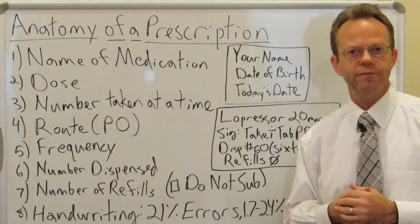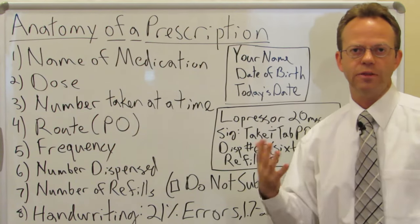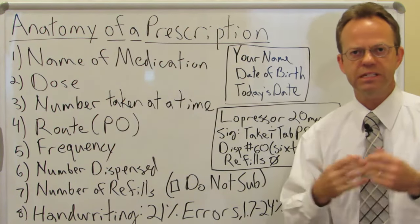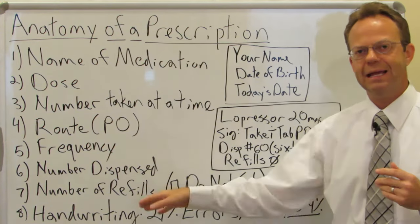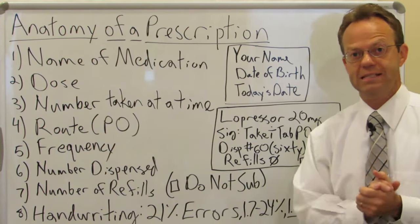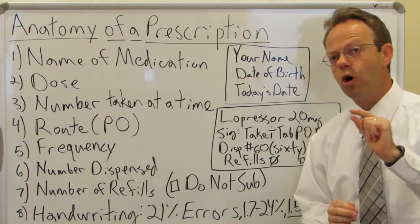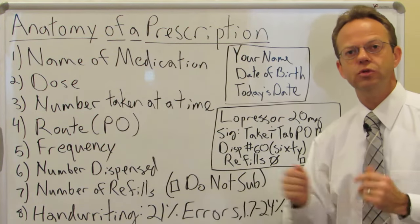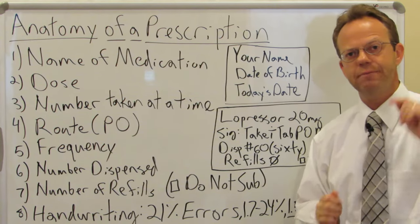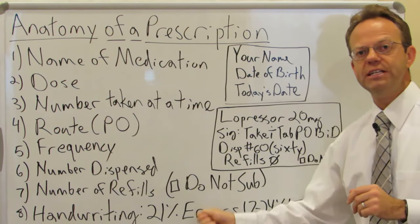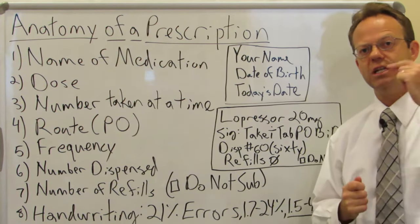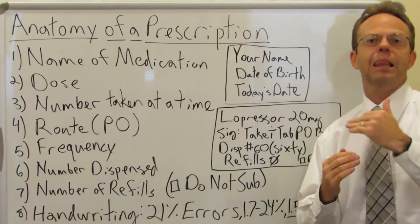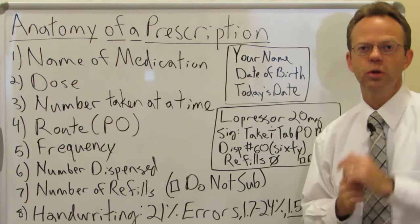Next up is the number of refills. After that month, you'd love to just call or contact your pharmacy and get another month's supply — can you get any refills? The physician has to specify that. There's also a box on the prescription that says 'do not substitute.' If they write the brand name and check 'do not substitute,' even if a generic exists, the pharmacist is not allowed to switch it to the generic.